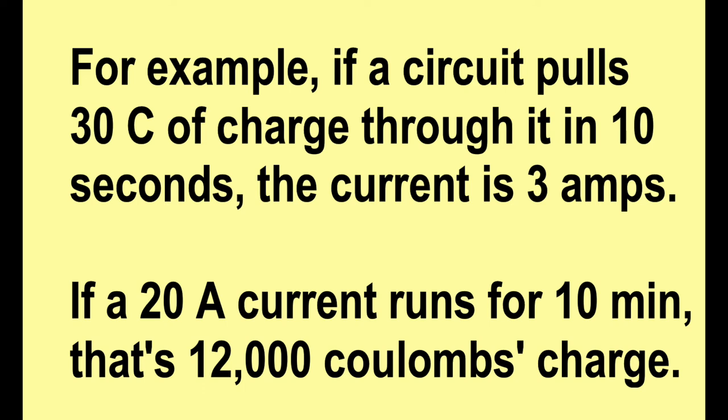For example, if a circuit pulls 30 coulombs of charge through it in 10 seconds, then the current is 3 amps — 30 over 10.